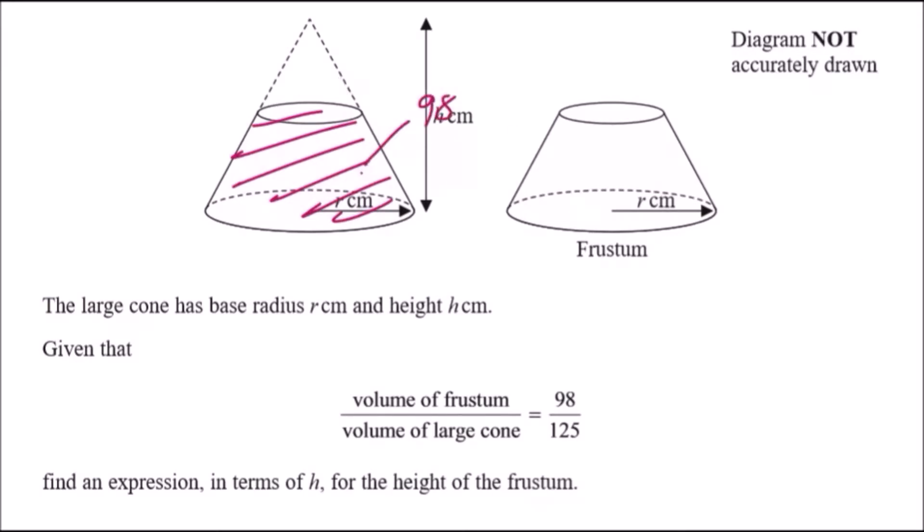This means the small cone must be 27 parts, which makes sense because 27 plus 98 gives us 125 parts. That tells us the volume of the small cone to the volume of the large cone has a relationship of 27 out of 125 parts.